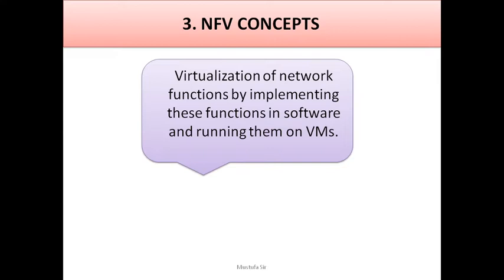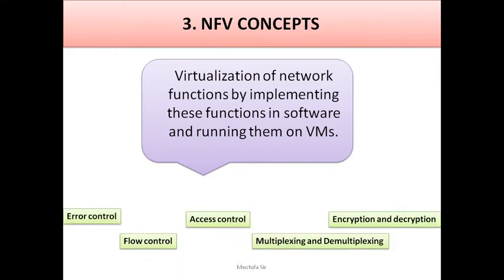NFV — network function virtualization — is defined as the virtualization of network functions by implementing those functions in software and running them on virtual machines. For example, instead of having five separate hardware devices for error control, flow control, access control, multiplexing/demultiplexing, and encryption/decryption, you can create virtual machines and implement all these functions in software. All five virtual machines run on a single physical machine, achieving efficiency and effectiveness in the modern networking era.